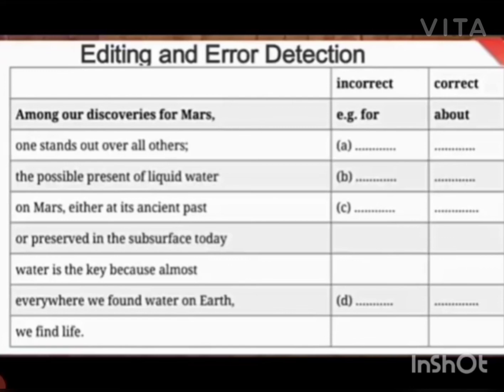Either at its ancient past — 'either' — on Mars, we never say 'on Mars.' We say 'in Mars.' Either at its past — or preserved in the subsurface today. So here there is no mistake. Water is the key because almost everywhere we found water on Earth — we never say 'found.' We say 'find.' Water on Earth — we find life. So this is the correction.